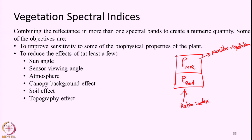With NIR in the numerator and red in the denominator: for healthy vegetation, NIR reflectance will be quite high and red reflectance will be quite low. When vegetation undergoes stress, red reflectance will increase — we have already seen how red reflectance increases and how the red edge shifts towards shorter wavelengths. For healthy vegetation this ratio will be very large, and for vegetation under stress or diseased vegetation this ratio will be smaller.